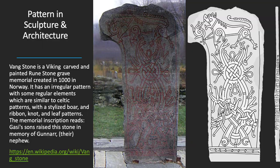Pattern in sculpture and architecture. Vang Stone is a Viking carved and painted runestone grave memorial created in 1000 in Norway. It has an irregular pattern with some regular elements, similar to the Celtic pattern, with a stylized bore and ribbon, knot, and leaf patterns. The memorial inscription reads: 'Gassi's sons raised this stone in the memory of Ganar, their nephew.' There is an image of the actual stone as well as a drawing of the design with the runic inscription.